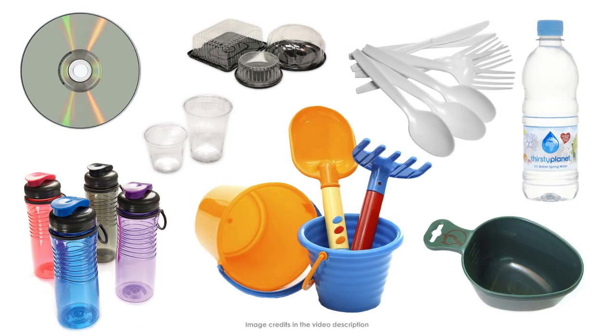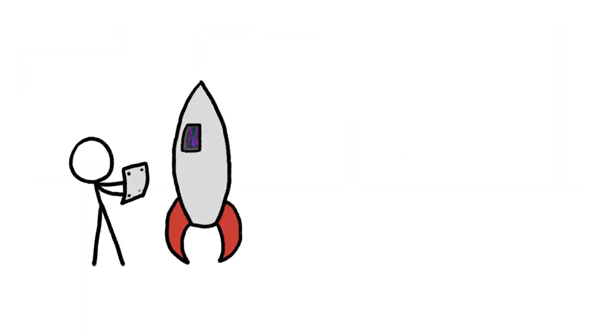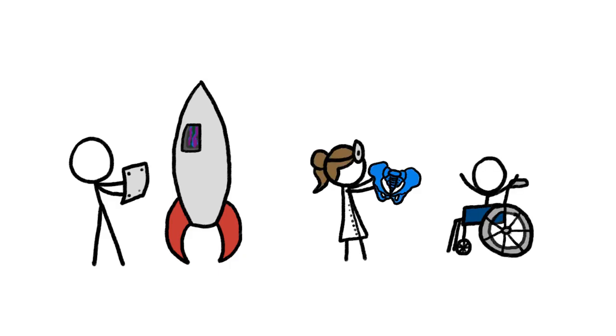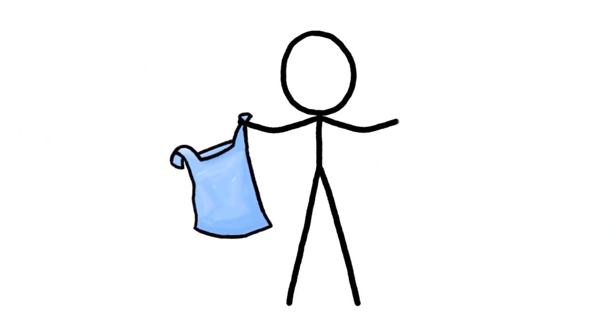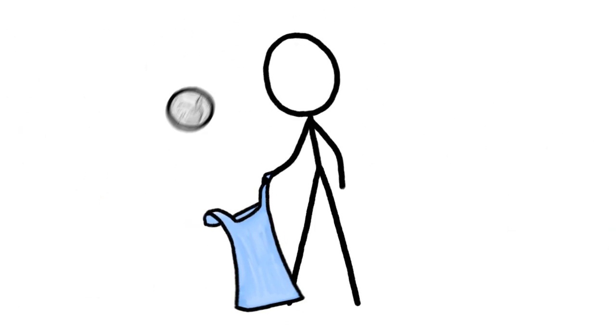In many ways, plastic is the perfect material. We can make it strong and rigid enough to build spaceships and replace bones, or thin and flexible enough to make shopping bags that weigh as much as a nickel but carry up to 8 kilograms.